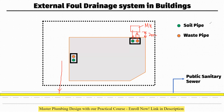We already know the difference: the soil pipe carries human excreta — the waste from WC and urinal. The waste pipe carries wastewater other than WC and urinal, like lavatory sinks which do not have human excreta. So the soil pipe is directly connected to the manhole, and the waste pipe first connects to the gully trap, then it connects to the manhole.